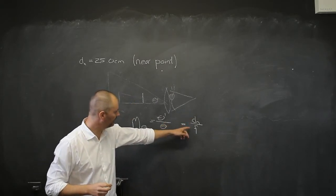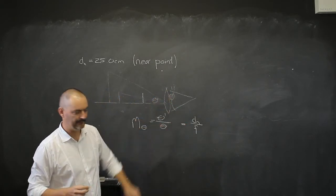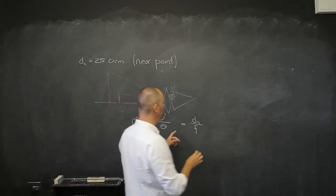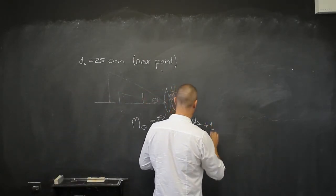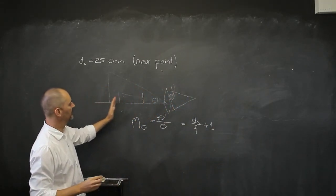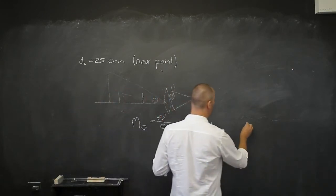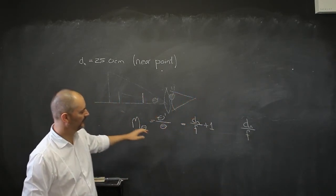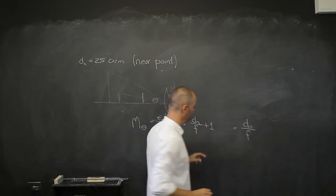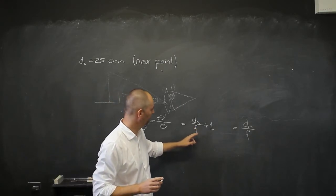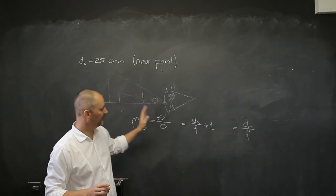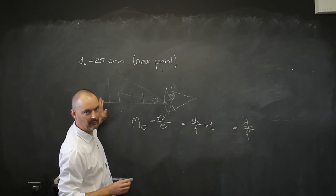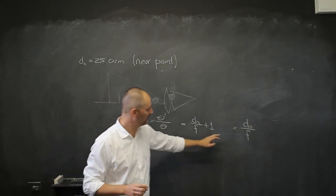It's going to be 25 centimeters divided by the focal length if your eye is right by. There are different textbooks that give two equations for this. Some say DN over F plus one for objects that are close to, placing an object closer to the lens. And then if it is far away from that magnifying lens, it is just given as DN over F. So just check which equation your textbook gives.